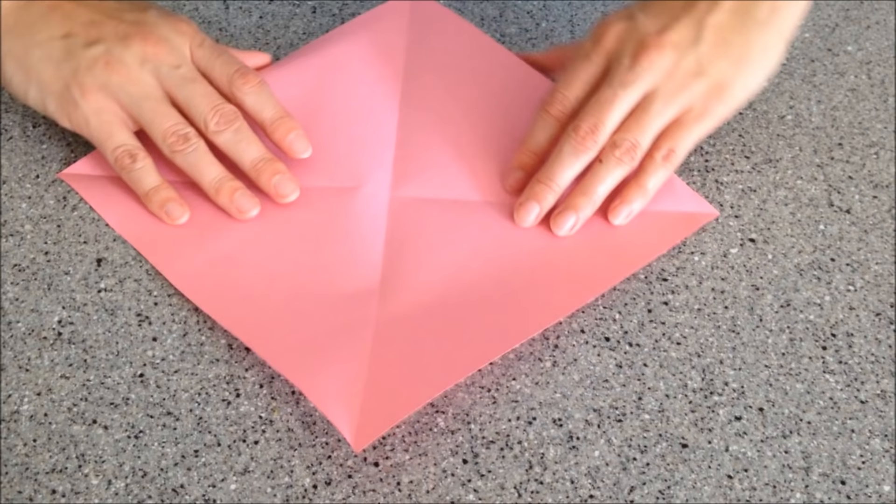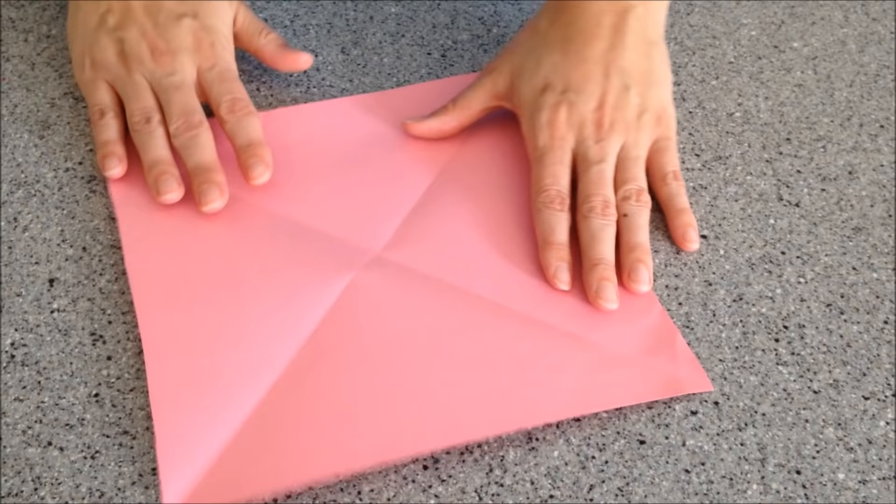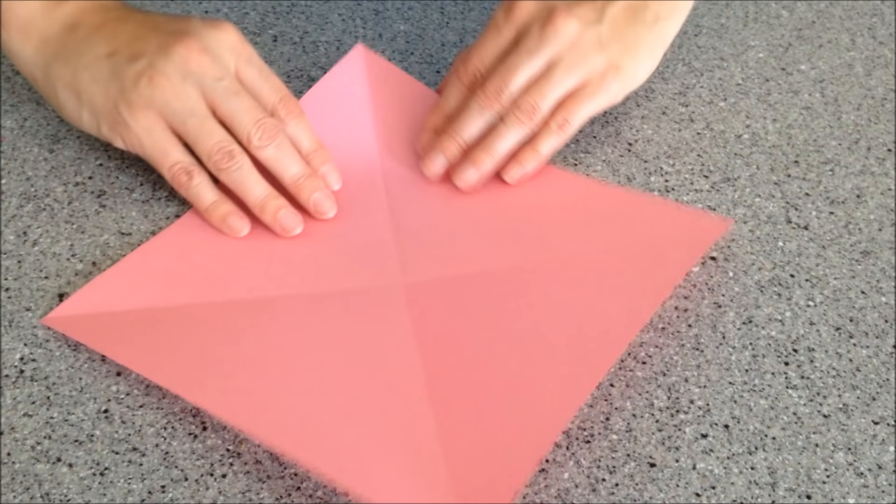Crease that and then you switch it around and you fold it again and give it a nice crease. When you open it back up you'll see that your paper is divided into four sections.